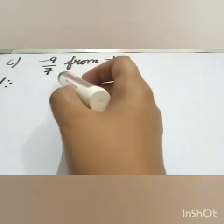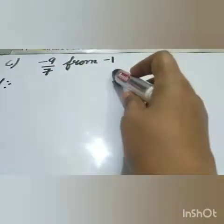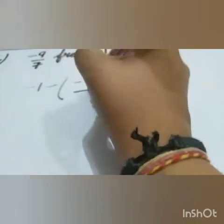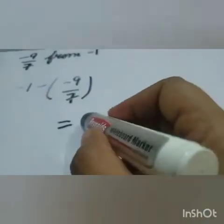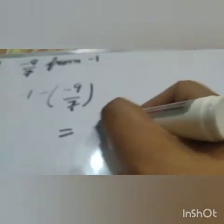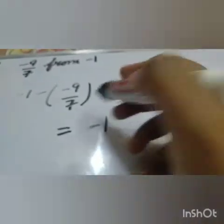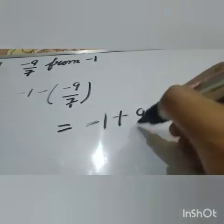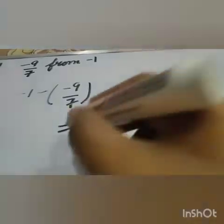Now here is part c: minus 9 by 7 from minus 1. It is minus 1 minus, what is this? Minus 9 by 7. In the bracket write minus 9 by 7. That is minus 1 minus minus, that is plus 9 by 7.